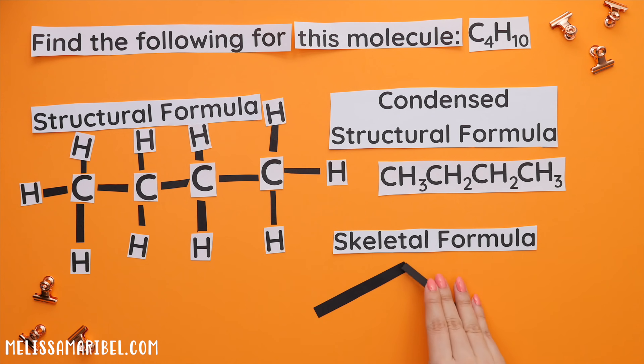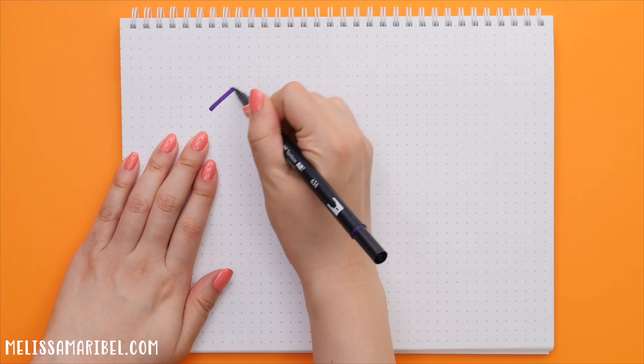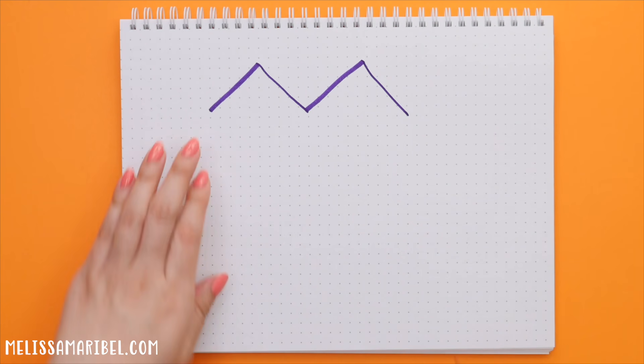Now for the skeletal formula. Since there are four carbons, we need four points. There is a trick to drawing this right each time. If you were to count one, two, three, four, we actually drew too many carbons.